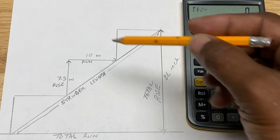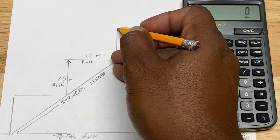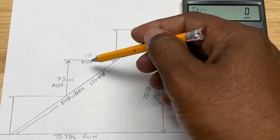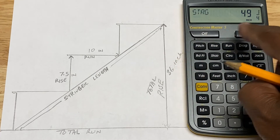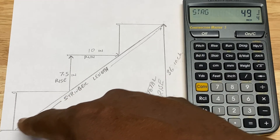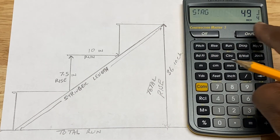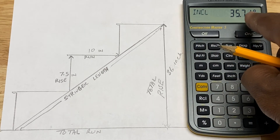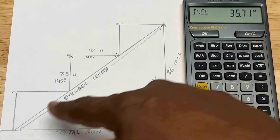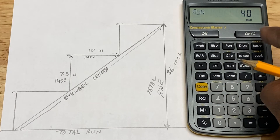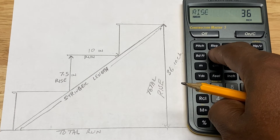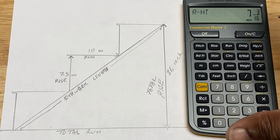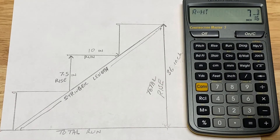It's worth noting that some steps have overhangs called nosings. Nosings are not included in the tread width or the run of the step. Press stair again and you get the stringer length — the diagonal support for the steps — which is 49 and a quarter inches. Press stair again for the angle of incline, which is 35.71 degrees.